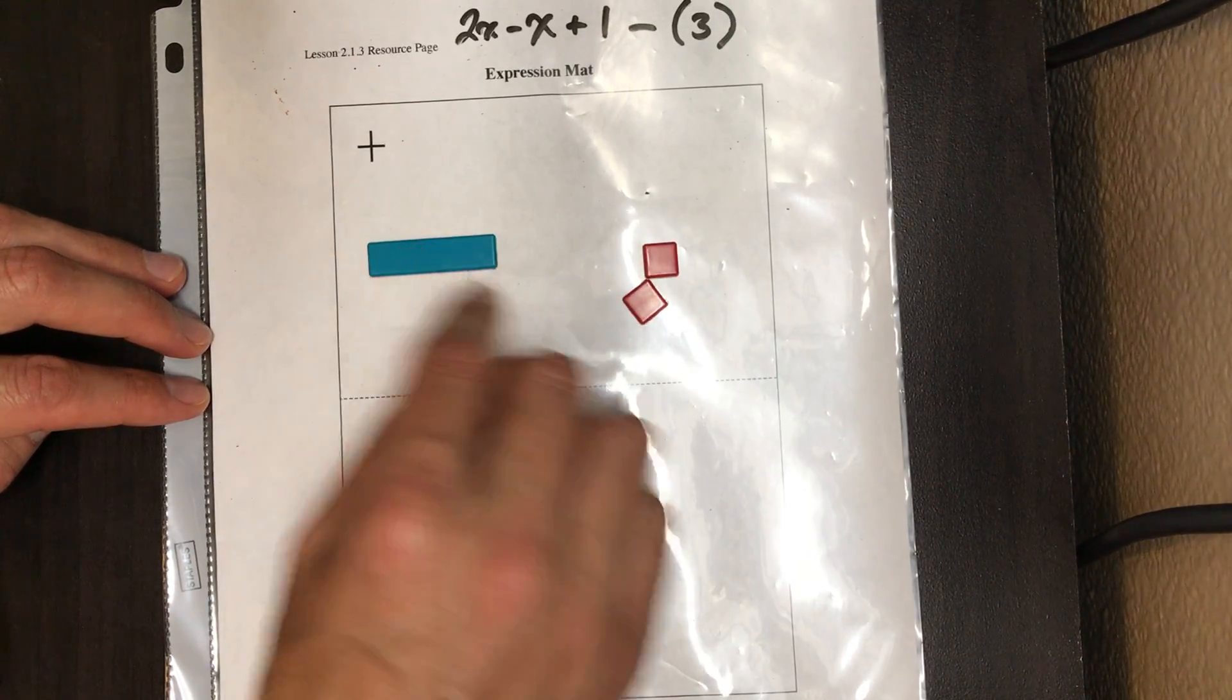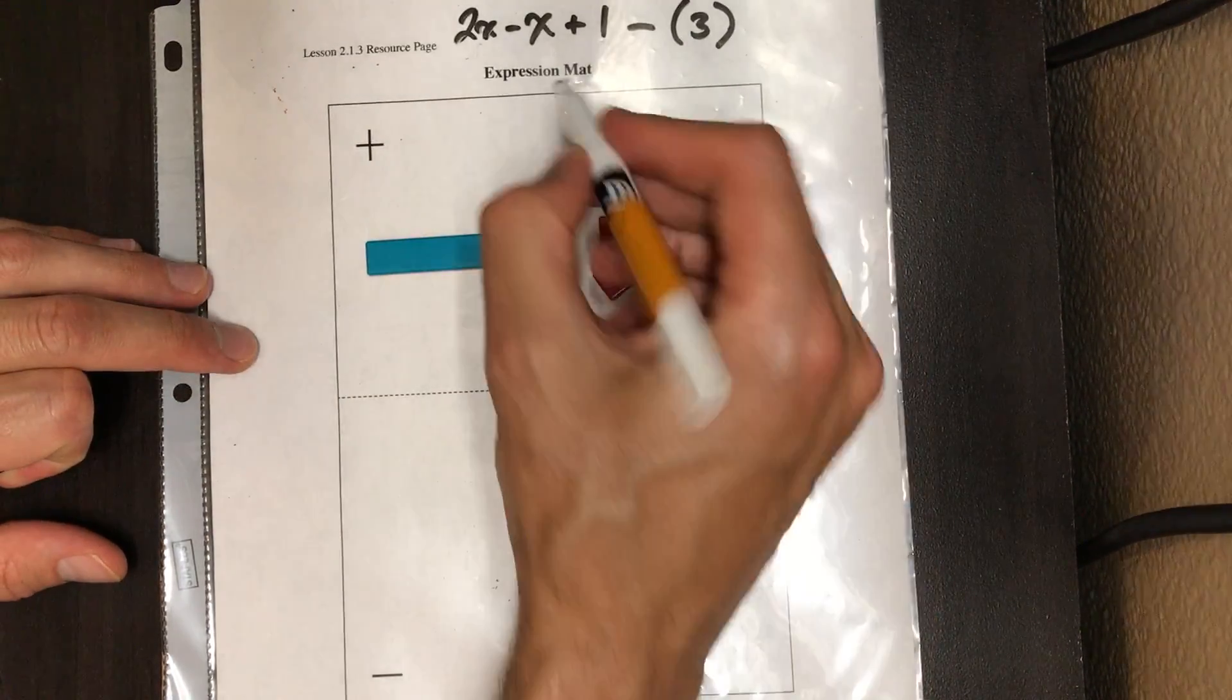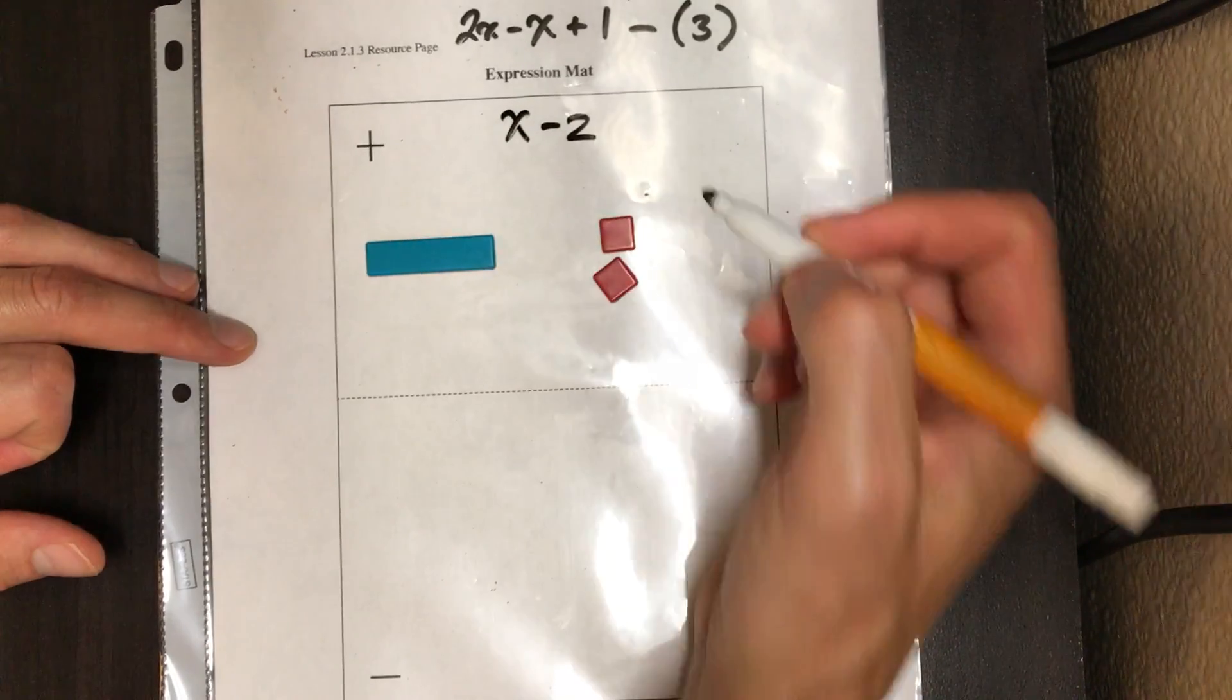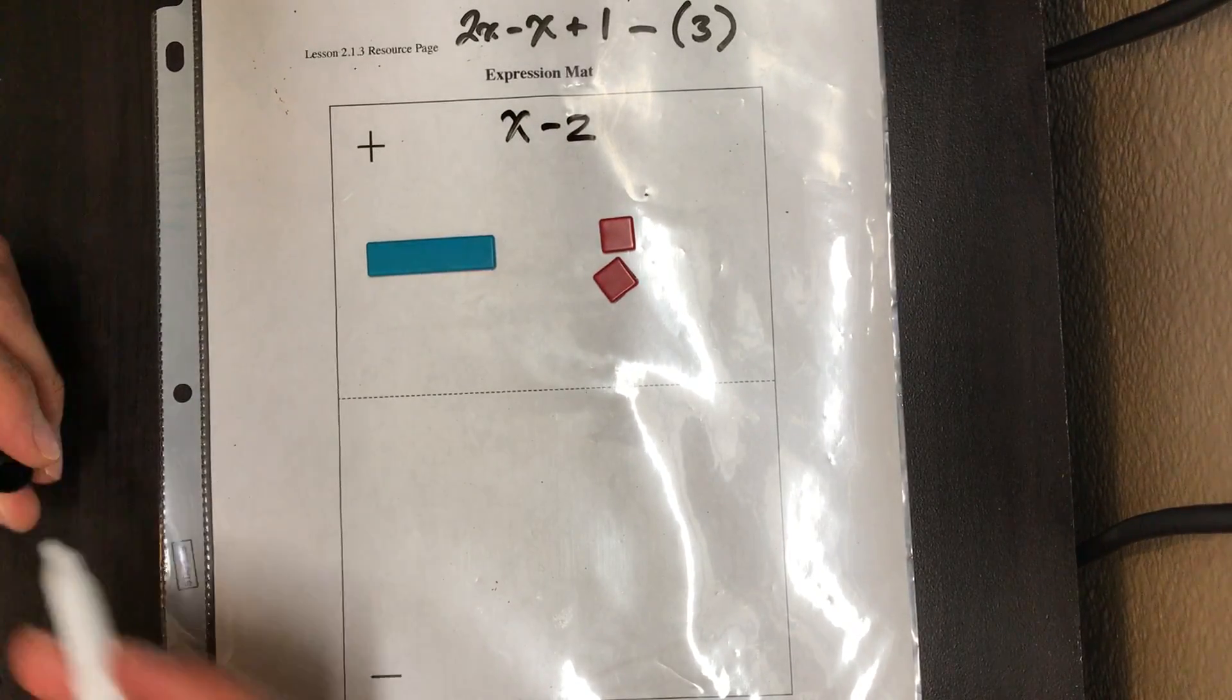And so now what are we left with? We're left with a positive x and two negatives. So this expression simplifies to one x minus two, or two negatives.